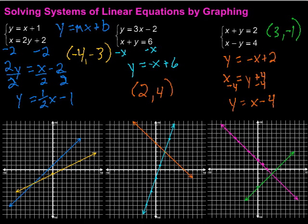Solving systems of linear equations by graphing means graphing both equations on the same coordinate plane and seeing how they interact. There are three outcomes: they meet at one point — one solution; they are the same line — infinitely many solutions because they overlap constantly along infinitely large lines; or they are parallel — no solution. I hope this was helpful, and keep working hard on your math!